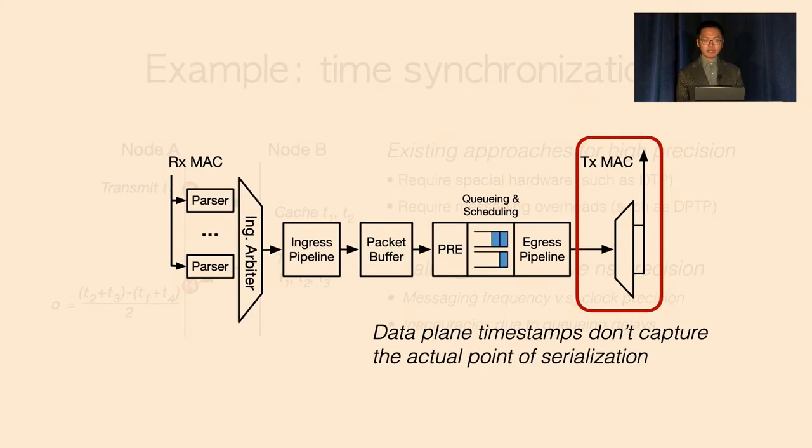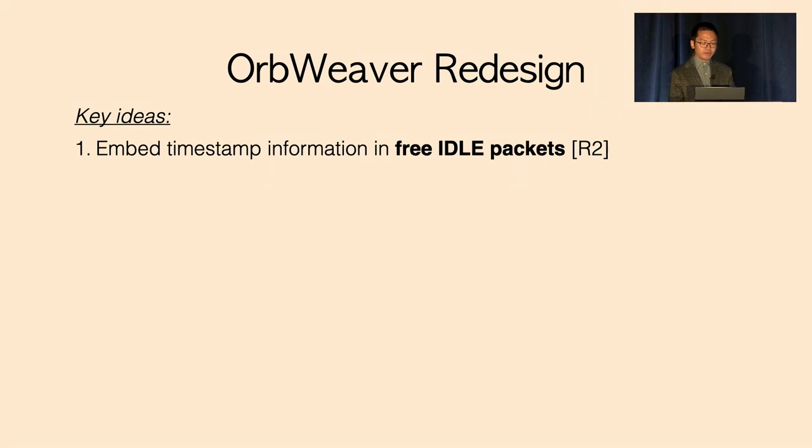As a particular example of this, in programmable switches, we noticed that the data plane timestamp might involve variable delays as a result of the egress MAC contention. This might cause inaccuracies in time synchronization. With OpWeaver, we're able to eliminate the message overheads and also achieve high precision.